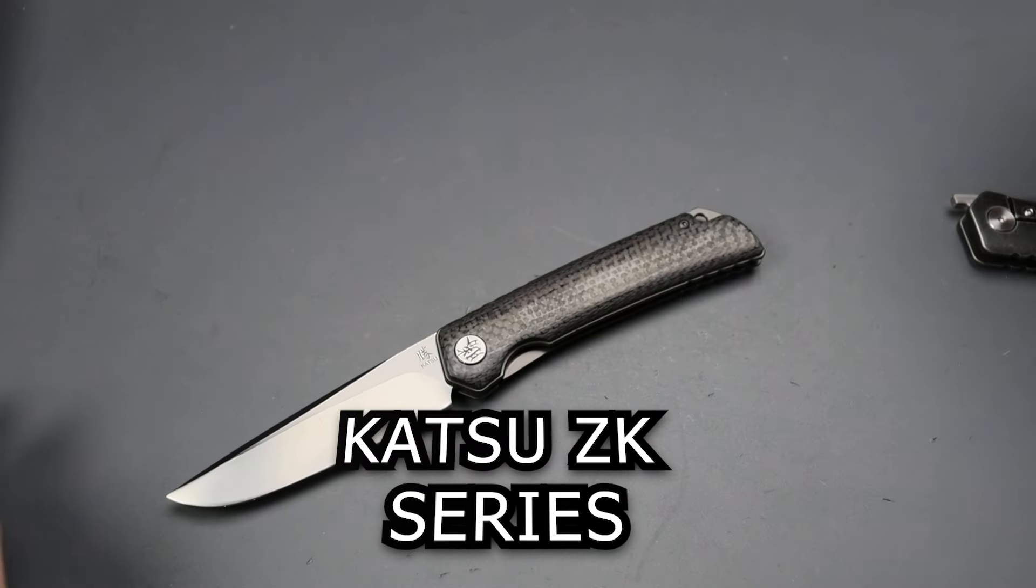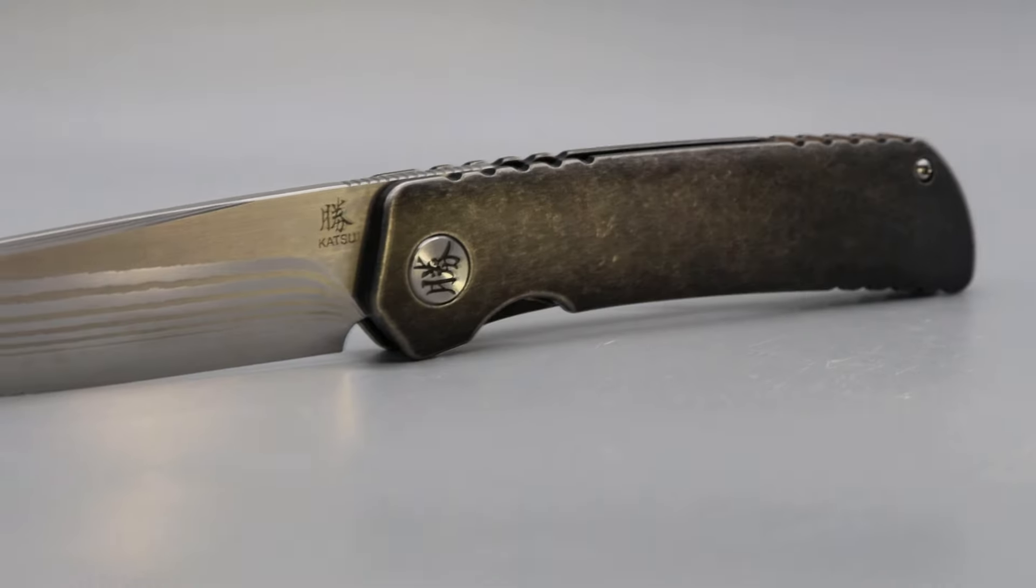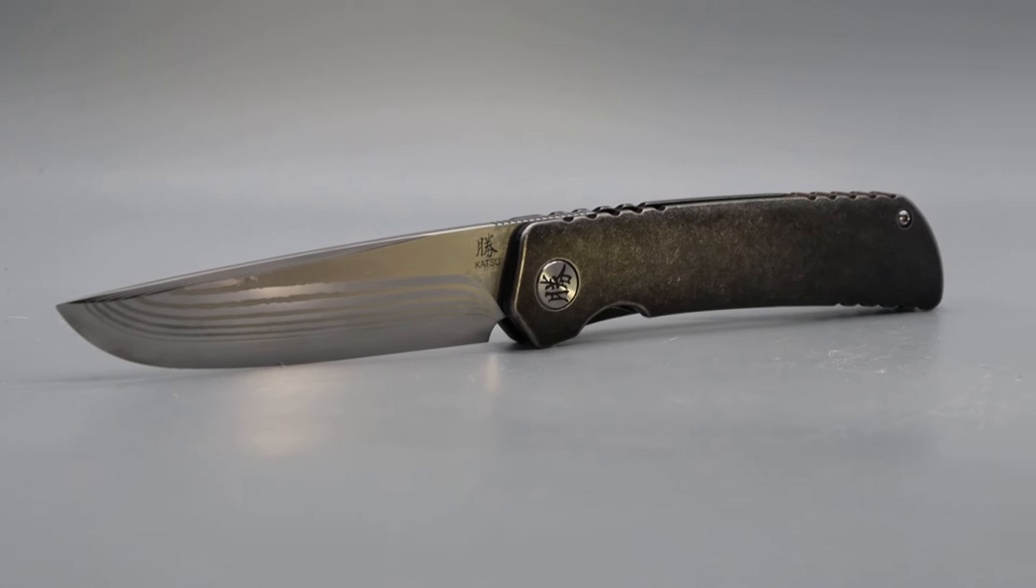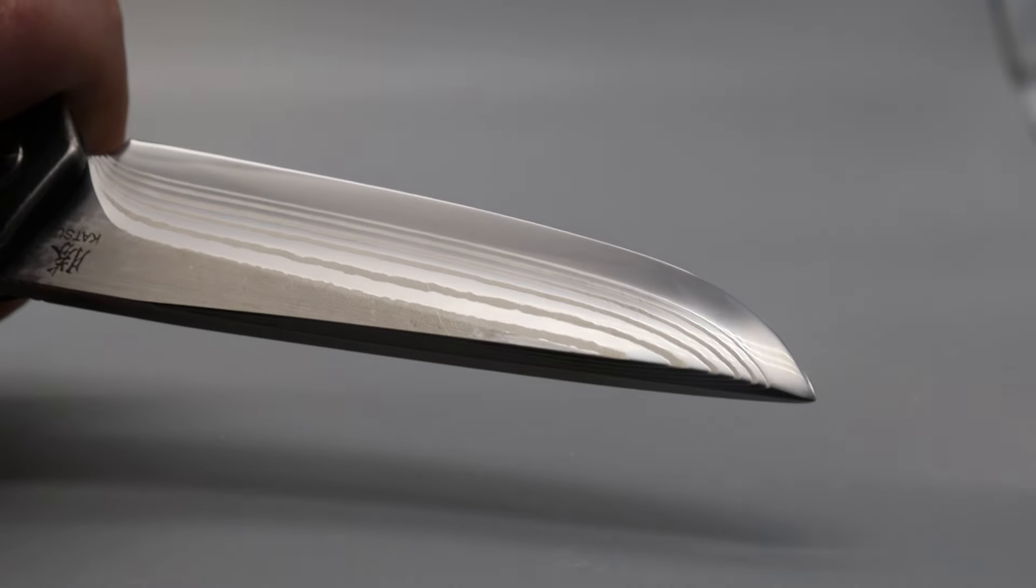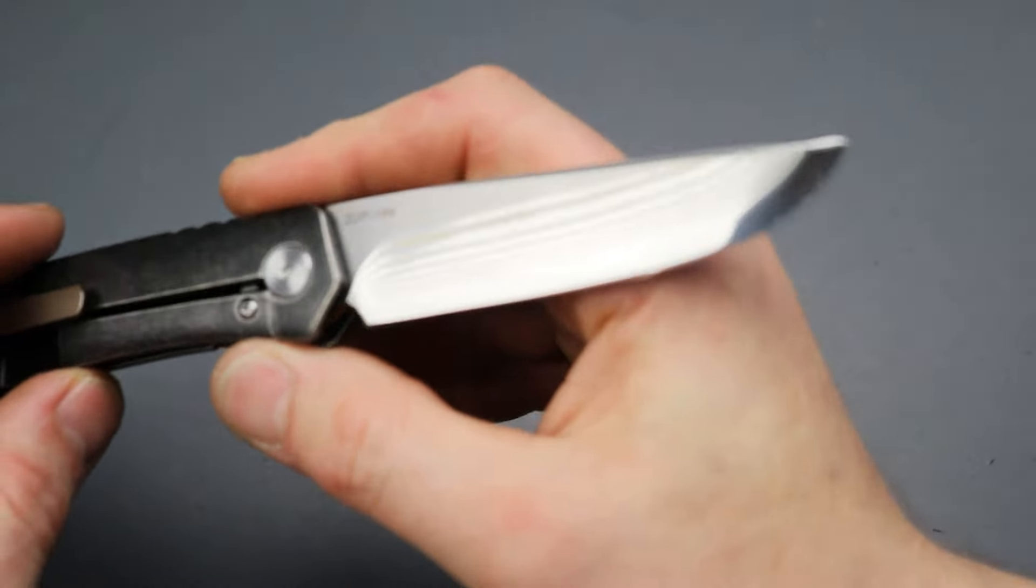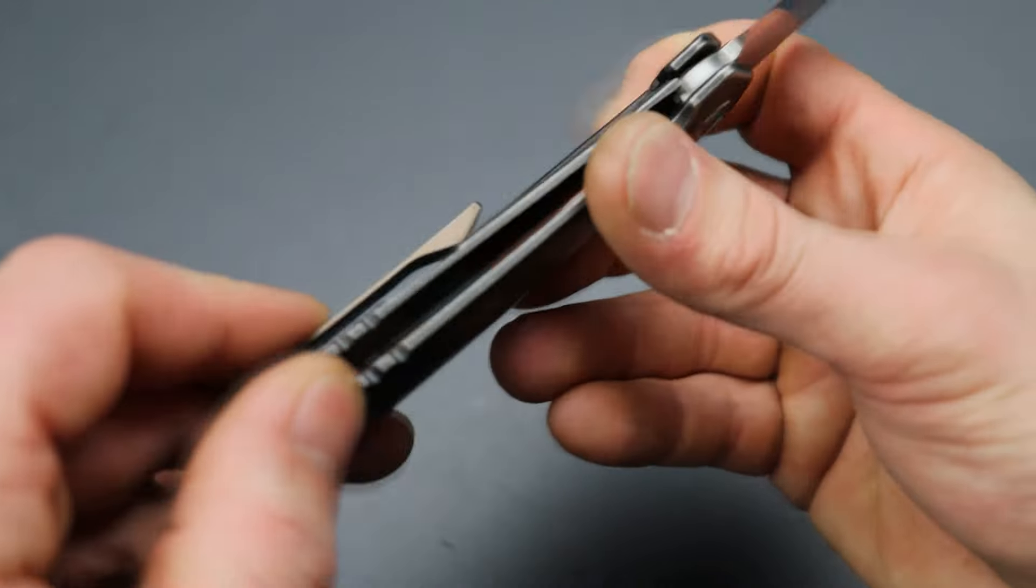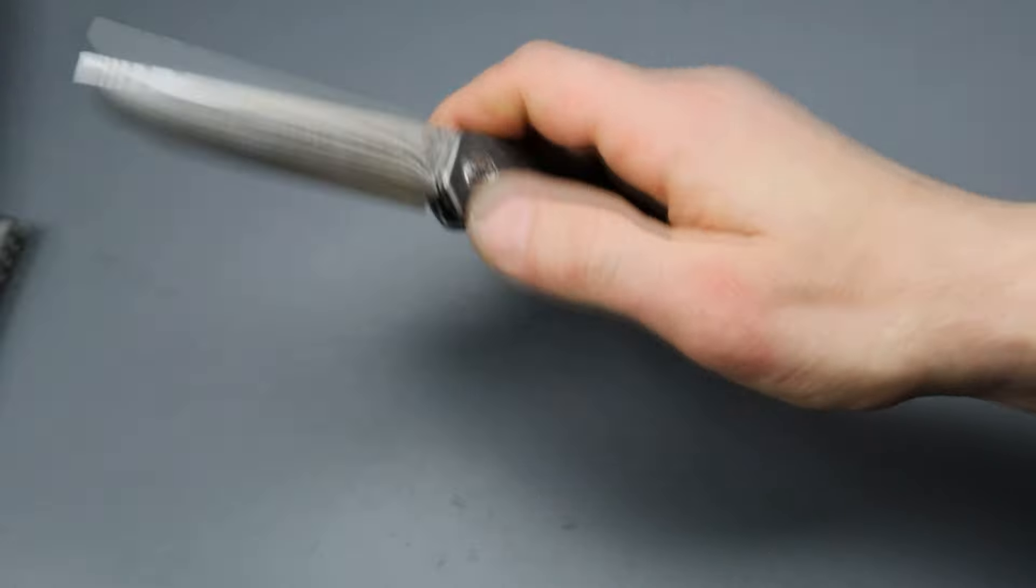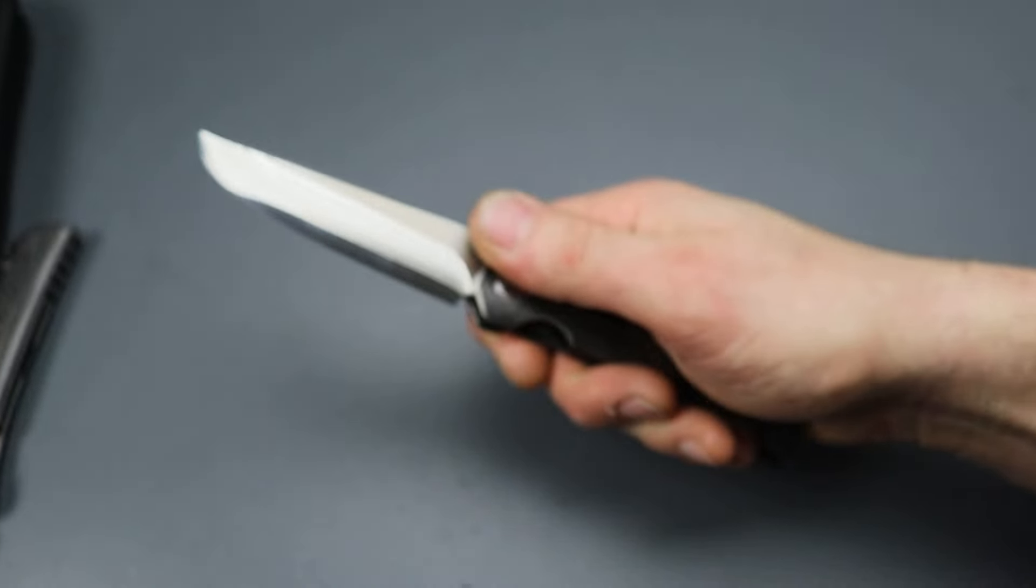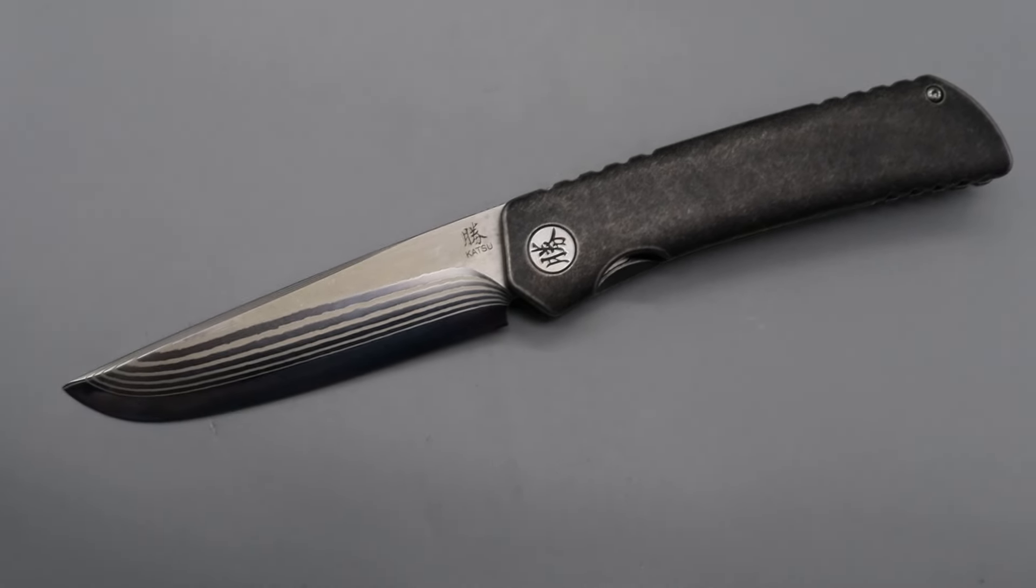This is a Katsu that uses ZDP 189 damascus steel with a mirrored convex grind. This is a great way to get a Japanese style folding knife for an affordable price. Not made in Japan but this is definitely a Japanese style like a Rockstead, but far more affordable than if you bought it from Rockstead. Full titanium frame lock with insane action and incredible front flipping action.